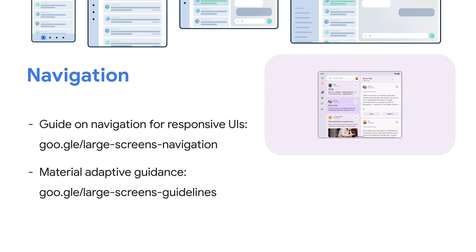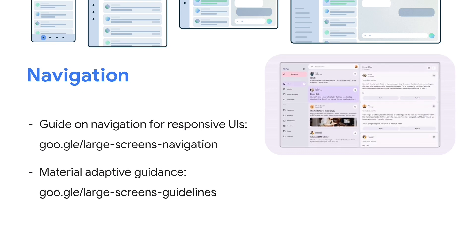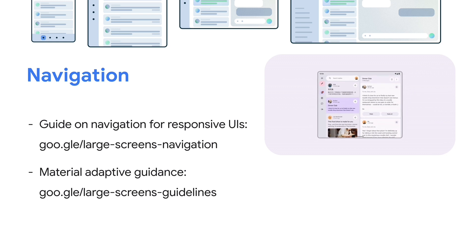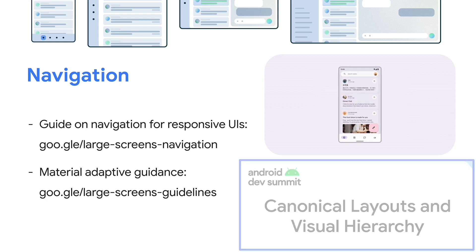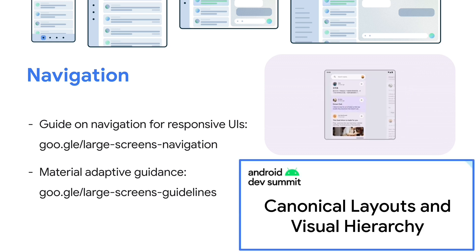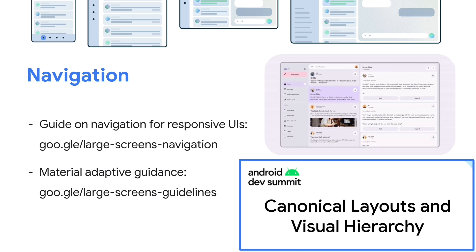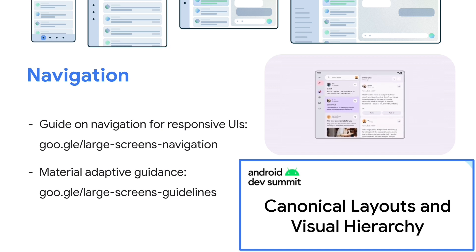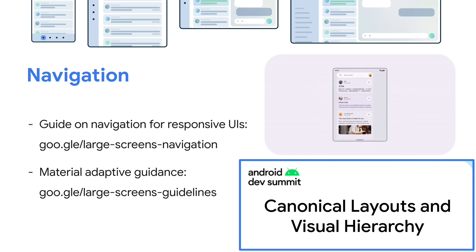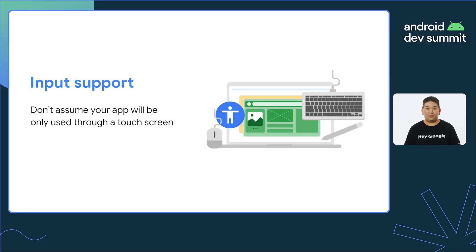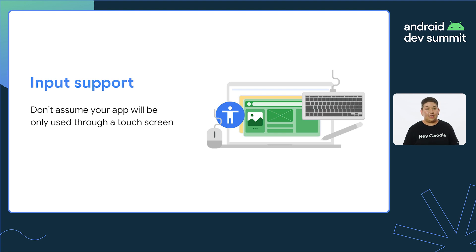Additionally, updating your app's navigation UI is important to provide the most reachable and usable experiences regardless of display size. To learn more about large screen-specific design, take a look at our 'Designing for large screens: canonical layouts and visual hierarchy' talk at ADS. In addition to large screen optimized UI and layouts, your app should also have improved keyboard, mouse, and trackpad support. For example, common keyboard shortcuts and actions should be supported, such as copy-paste, undo and redo, and more.